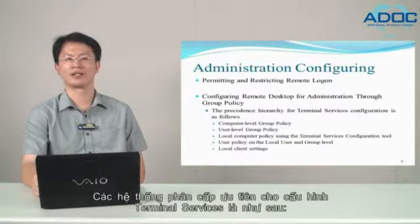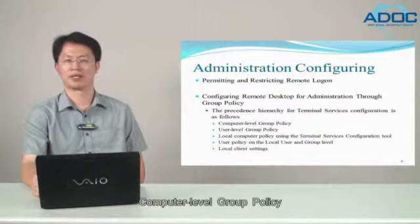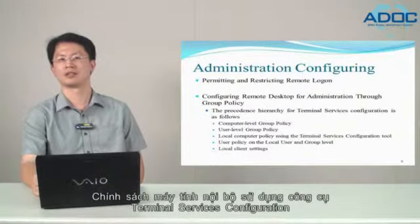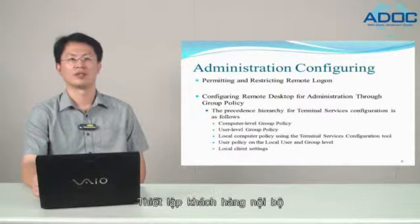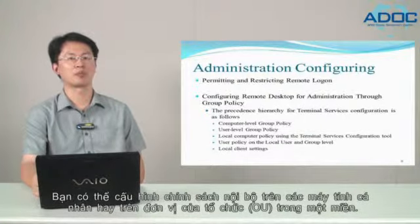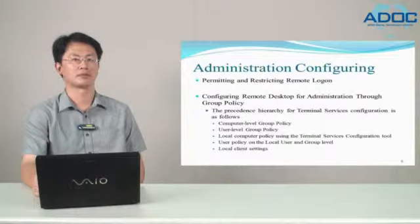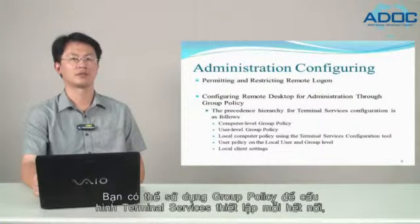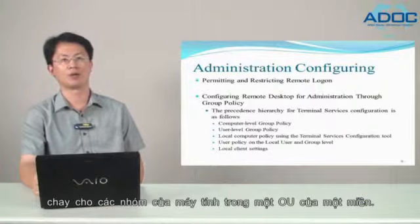The precedence hierarchy for terminal services configuration is as follows: computer-level group policy, user-level group policy, local computer policy using the terminal services configuration tools, user policy on the local user and group level, and local client settings. You can configure local policies on individual computers or on an organizational unit in a domain, and you can use group policy to configure terminal services settings per connection, per user, per network, per computer, or for groups of computers in an OU of a domain.